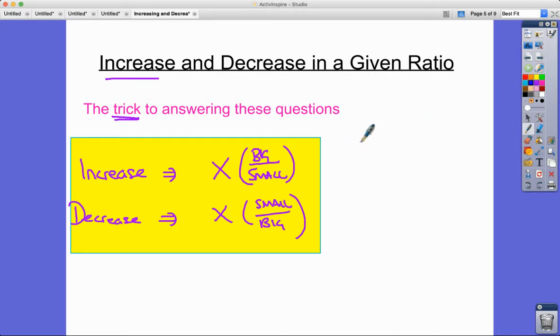Basically, imagine that you were given - increase £40 in the ratio 4 to 5. All you would do then is look at the ratio. You've got a big number and a small number, or a bigger number and smaller number.